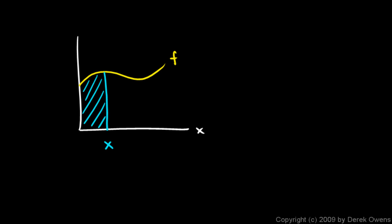Just as first semester dealt with the slope of a graph, second semester calculus deals with the area under a graph. Imagine this vertical line moving to the right. As it moves, this area — let's call it area A — increases. As x moves to the right, the line sweeps out more and more area. The terminology often used is that the line sweeps out an area as x increases.